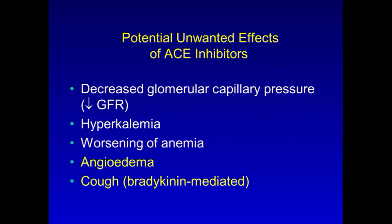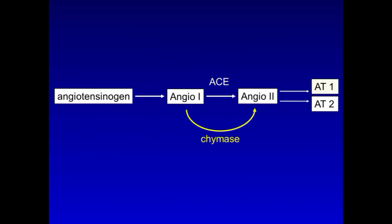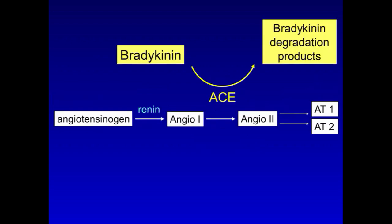Now, in order to understand the last two side effects listed here, let's look in more detail at the actual ACE pathway. Notice that not all angiotensin-1 gets converted to angiotensin-2 via ACE. A small amount is converted by an enzyme called chymase. So even with an ACE inhibitor, some angiotensin-2 can still be formed. Also, ACE has another role: it degrades the vasodilating inflammatory mediator bradykinin. So using an ACE inhibitor blocks this degradation, resulting in more bradykinin sticking around, and this is believed to be the mechanism of two well-known ACE inhibitor side effects.